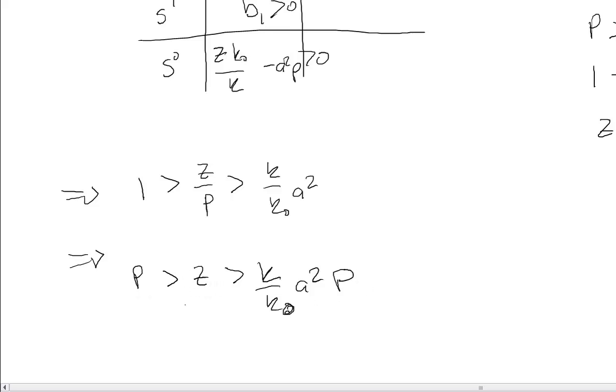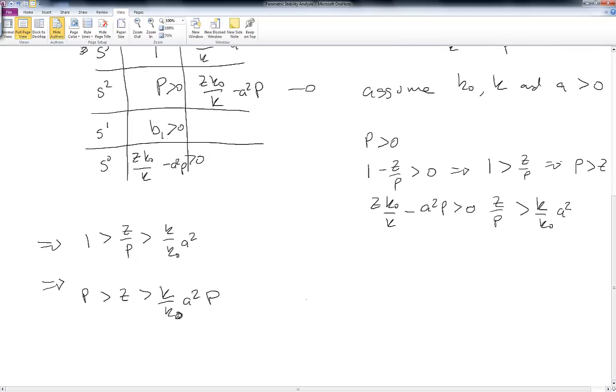So I have two inequalities that bound the value of Z. And the next thing we can do is go ahead and make a plot. And these plots can be useful for looking at regions of stability. So if I plot on a set of axes, I plot P versus Z. This inequality is bounded by the line where P equals Z. So that's just a line with slope 1, P equals Z.